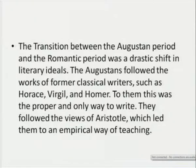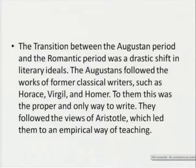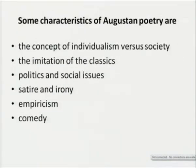The Augustans followed the works of former classical writers such as Horace, Virgil, and Homer — attention to detail, attention to rules, attention to perfection and elegance of prose, where everything went under great scrutiny. Everything was not just spontaneous imagination or spontaneous overflow of feelings. To them, this was the proper and only way to write; they followed the views of Aristotle, which led them to an empirical way of teaching. Some characteristics of Augustan poetry are: the concept of individualism versus society, imitation of the classics, politics and social issues, satire and irony, rhetoric and prosody, empiricism and comedy.